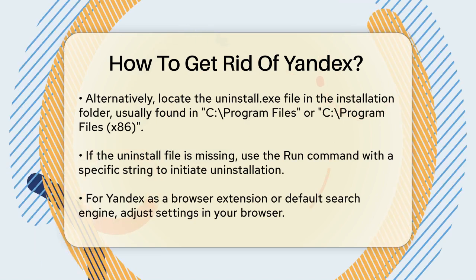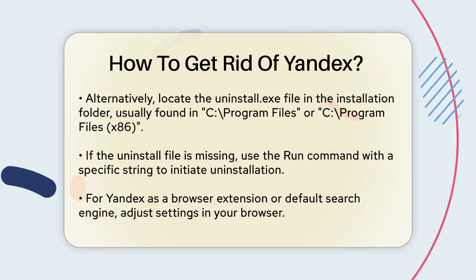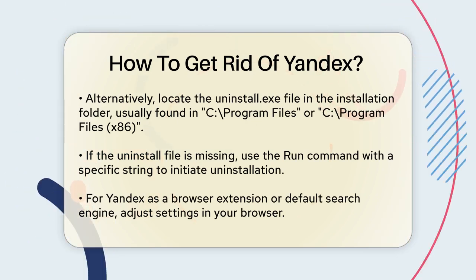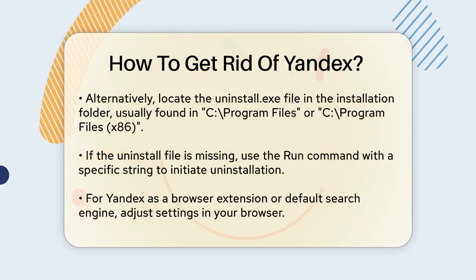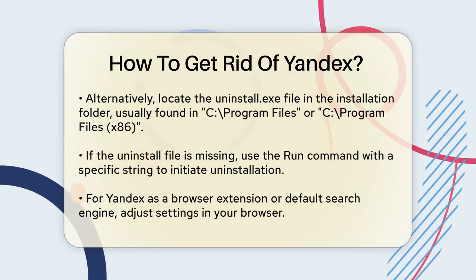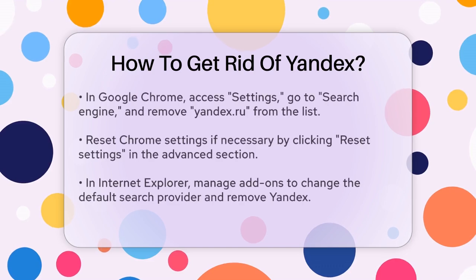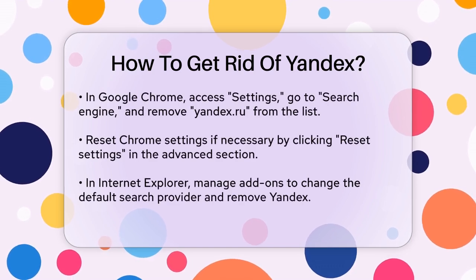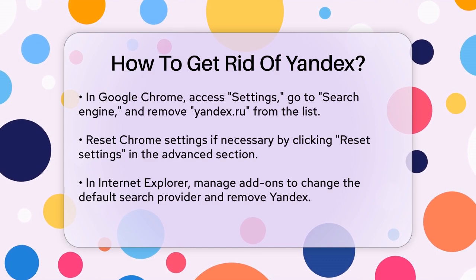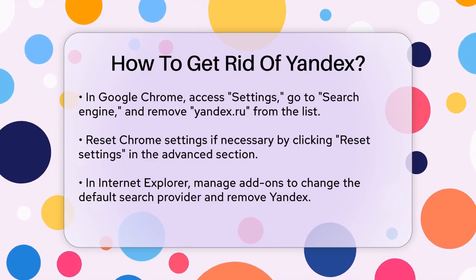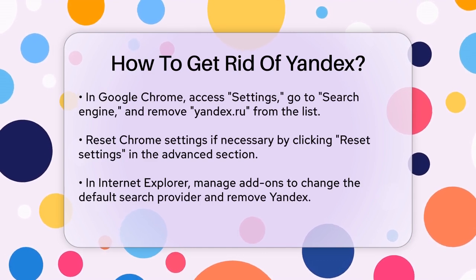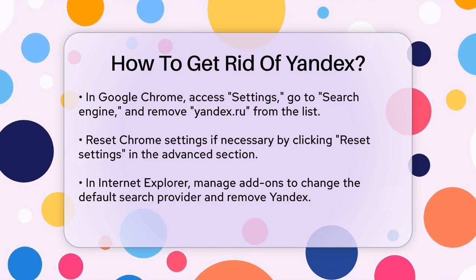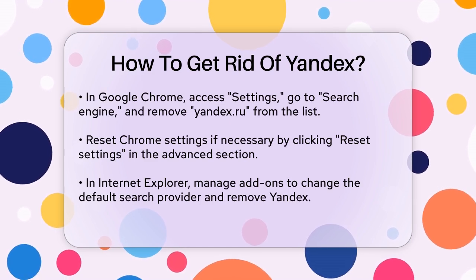For users who have Yandex installed as a browser extension or default search engine, you'll need to remove it from your browser settings. In Google Chrome, click the Chrome menu icon, select Settings, go to the Search Engine section, and click Manage Search Engines. Find Yandex.ru in the list, click the three vertical dots near it, and select Remove from List.